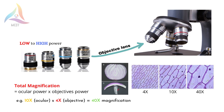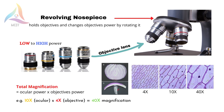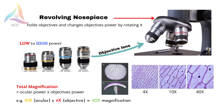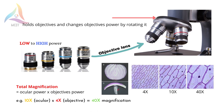So, when a 4x objective lens is coupled with a 10x ocular lens, we get a total magnification of 40x (4x × 10x). The revolving nosepiece is the part that holds the objective lenses and can be rotated to easily change between objective lens powers.